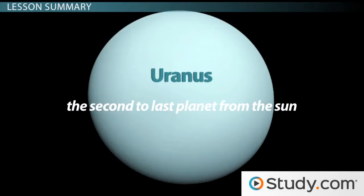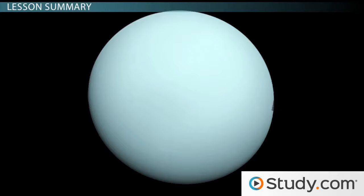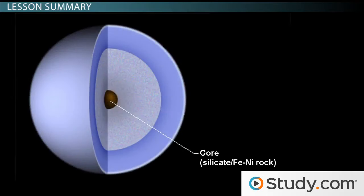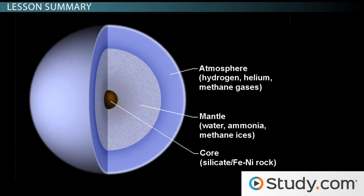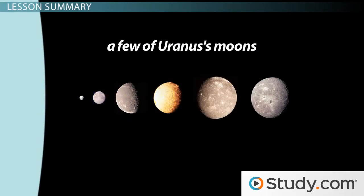Uranus is the second to last planet from the sun. Its atmosphere is composed of hydrogen, helium, and methane, or CH4. The latter is responsible for the planet's color. The planet is made of a core of heavy elements, surrounded by a mantle of water and ammonia, which is in turn surrounded by a layer of liquid hydrogen, helium, and methane.